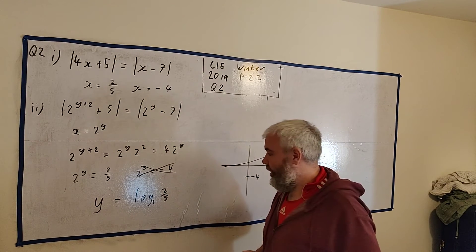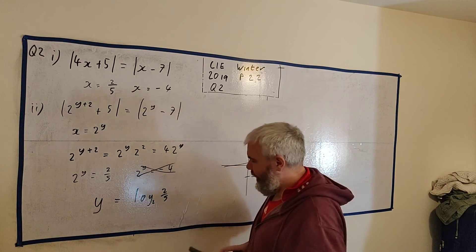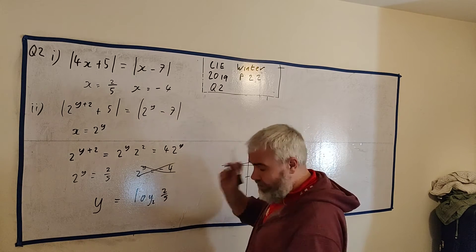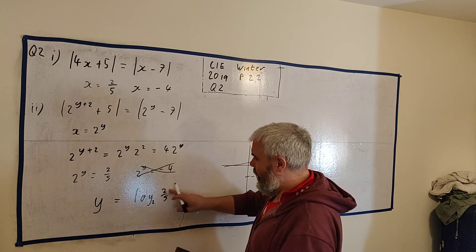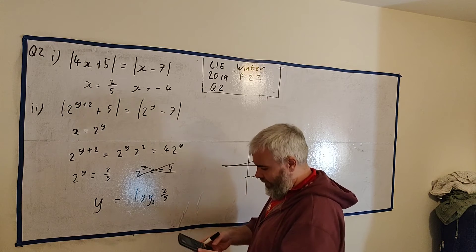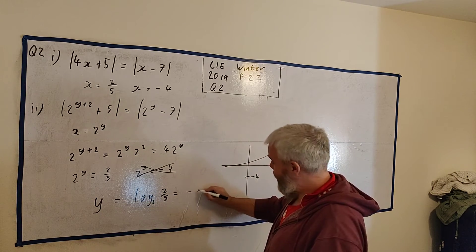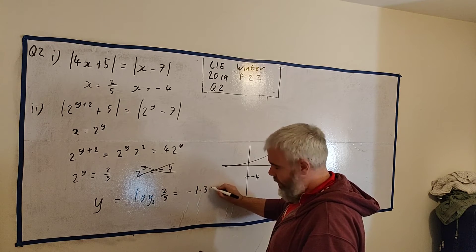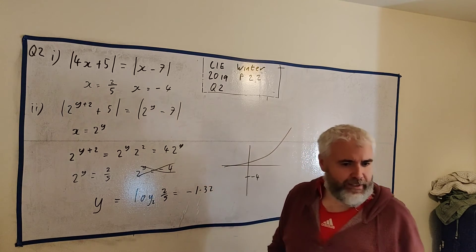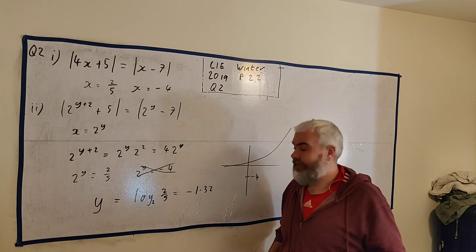And with the magic of editing, it has appeared in my hand. If I type in log to the base 2 and inside the bracket 2 divided by 5 and I hit equals, I will get this number. Y must be equal to minus 1.32. How many decimal places do they have? Correct to three significant figures.